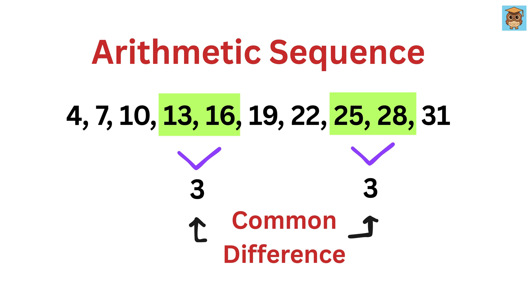You get the next term by adding the common difference to the previous one. Like after 31, the next term in this sequence will be 31 plus 3 or 34.